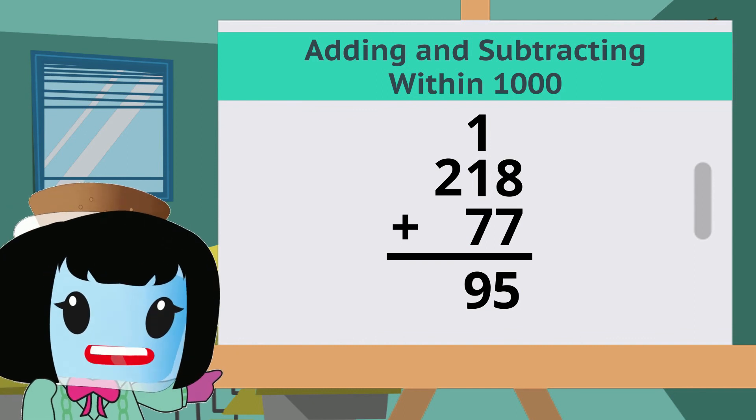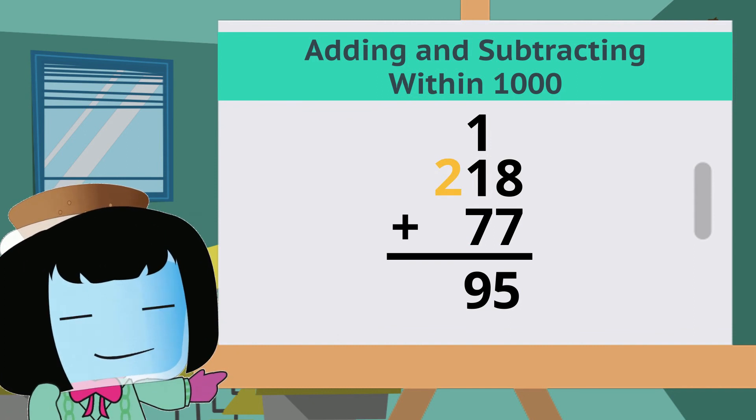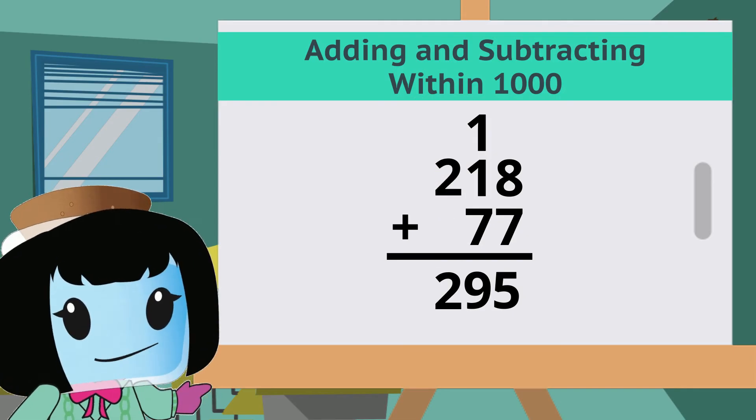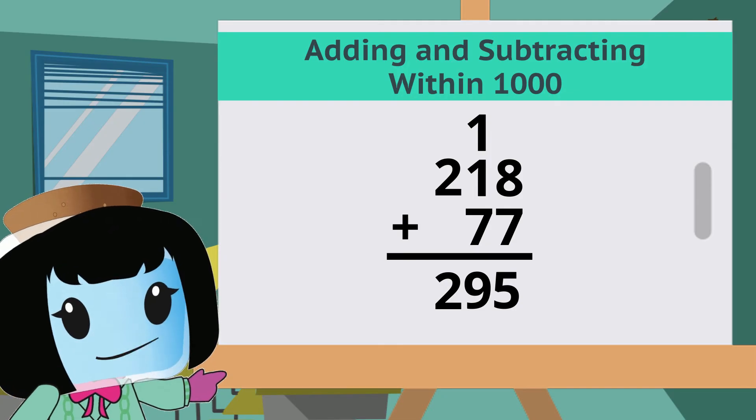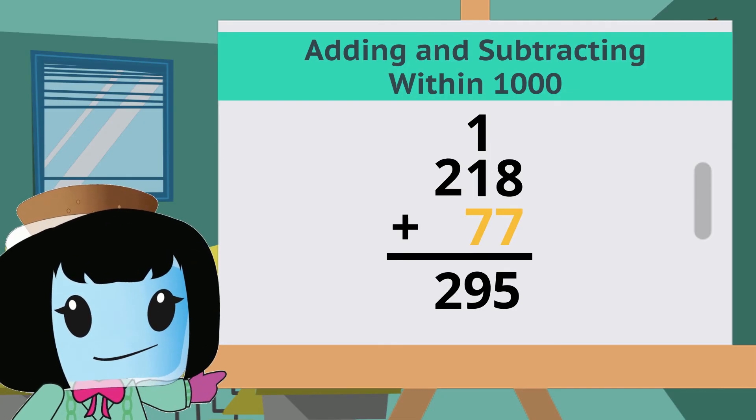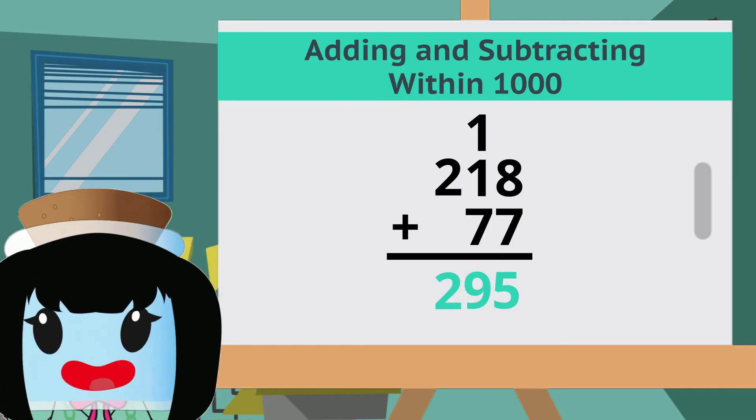Lastly, since 2 is alone in the hundreds place, we can simply bring it down. Therefore, 218 plus 77 equals 295.